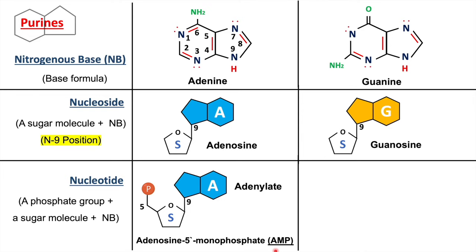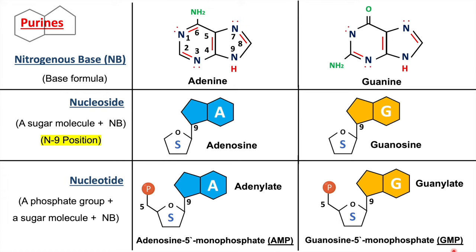Similarly, when the phosphate group is attached to guanosine, it is called guanylate, and alternatively it is called guanosine 5'-monophosphate (GMP). So just to clarify: nitrogenous base → add sugar → nucleoside → add phosphate → nucleotide.